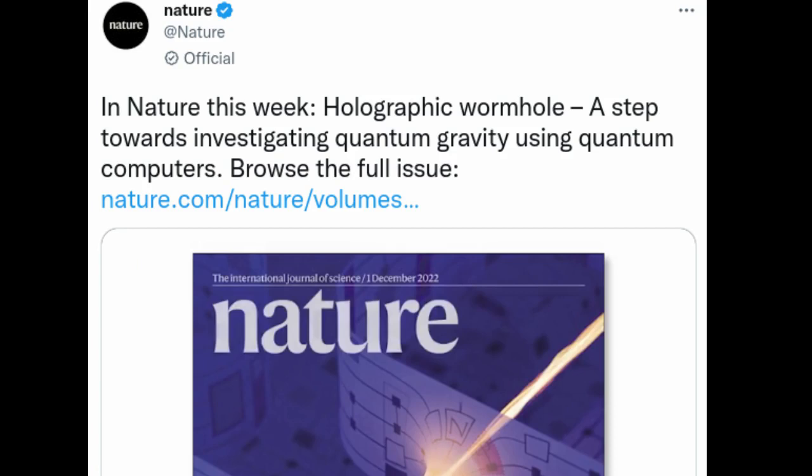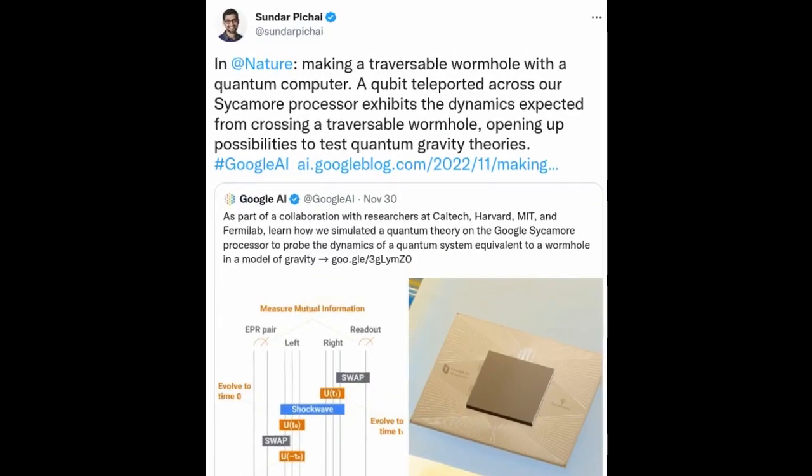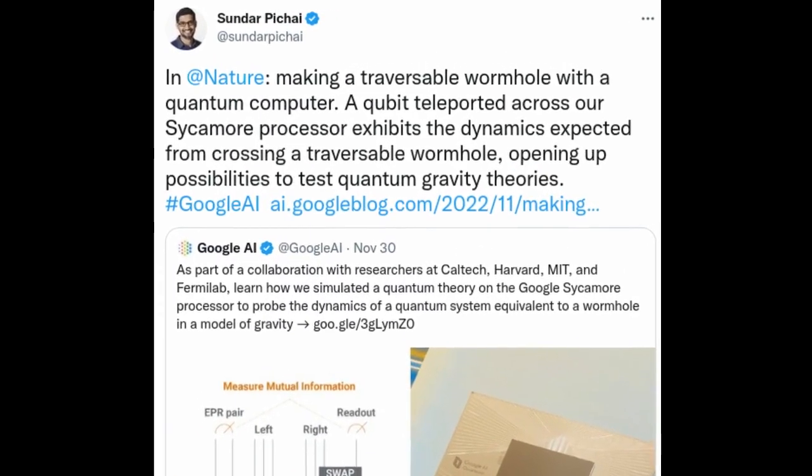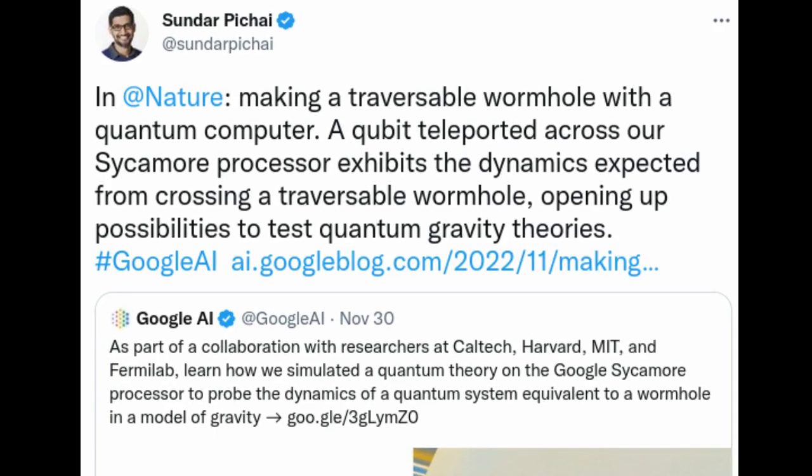Wormholes are bridges between two remote regions in space-time. They have not been observed experimentally, but scientists have theorized about their existence and properties for close to 100 years.